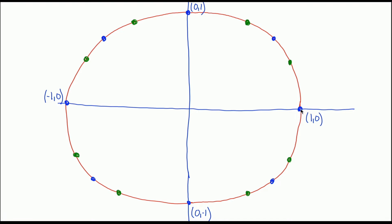For example, you already know that this point has an x-coordinate of 1 and a y-coordinate of 0. This point up here has an x-coordinate of 0 and a y-coordinate of 1. And similarly, negative 1, 0 and 0, negative 1 are the x and y coordinates of these two points. That's four of the 16 points — what about the rest of them?